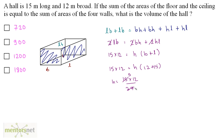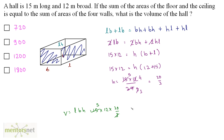3 times 5 is 15, 3 times 9 is 27, 3 times 3 is 9, 3 times 4 is 12. So we have 20 by 3 as the height. Now volume equals L times B times H. That's 15 times 12 times 20 by 3. 3 times 5 is 15, so we have 20 times 5, that's 100 times 12, and that's 1200 meters cube. So option C is the correct answer.